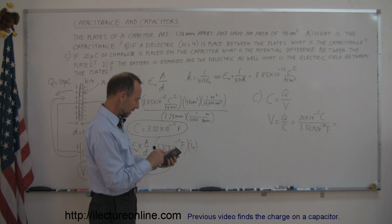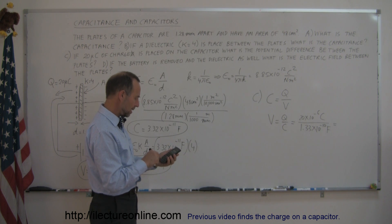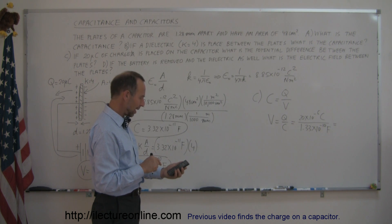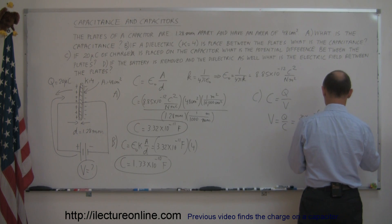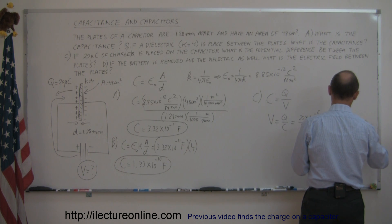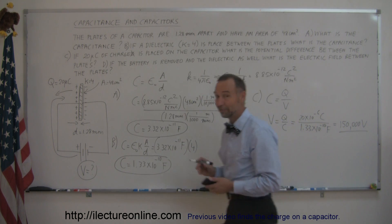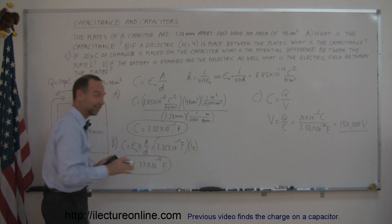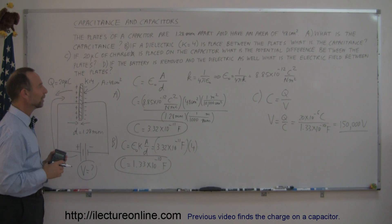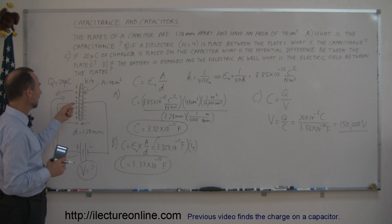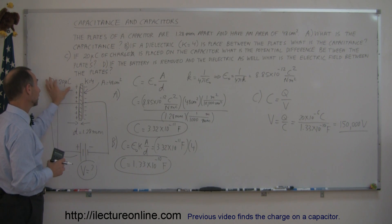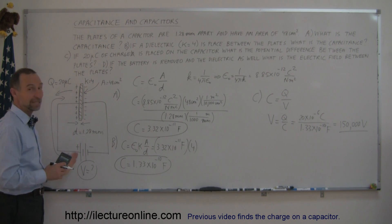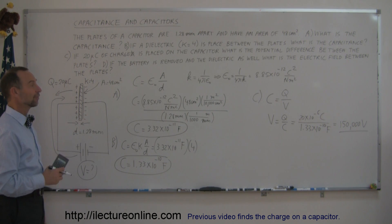Computing that ratio gives us 150,000 volts — quite a battery! That means for this relatively small 48 square centimeter capacitor, to place that much charge on it, you need an enormous push of 150,000 volts. I would stay far away from a battery like that, but this is just an example to show how to solve the problem.